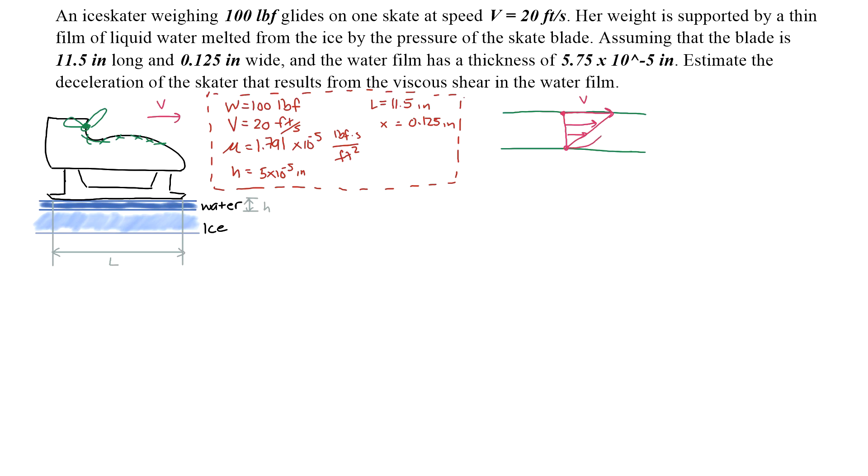This could be parabolic, but since the film is very, very thin, a good approximation is that the velocity profile is linear. So we'll define upward from this bottom part of the ice as Y, and then this total height is simply H.